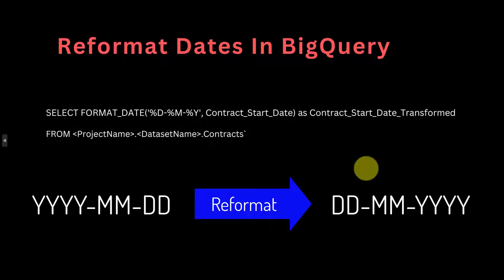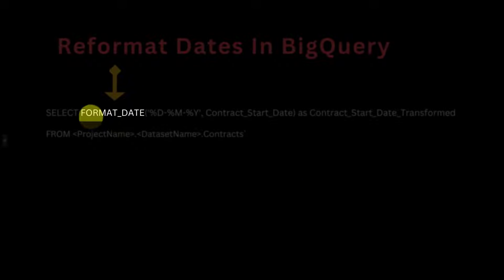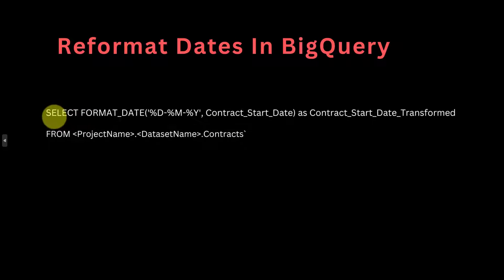Here's how you can do it. You can create a copy of that column by using a very simple SELECT statement. The function you'll need to use in order to transform and reformat the date is the FORMAT_DATE function within BigQuery. So here's how the SELECT statement goes — you write SELECT.